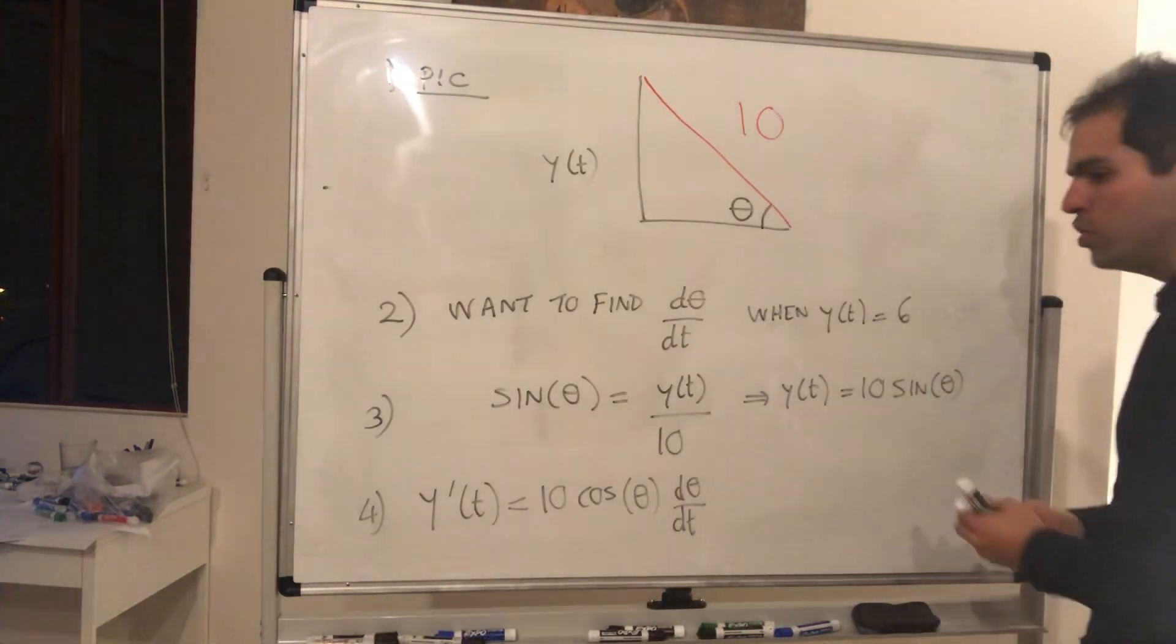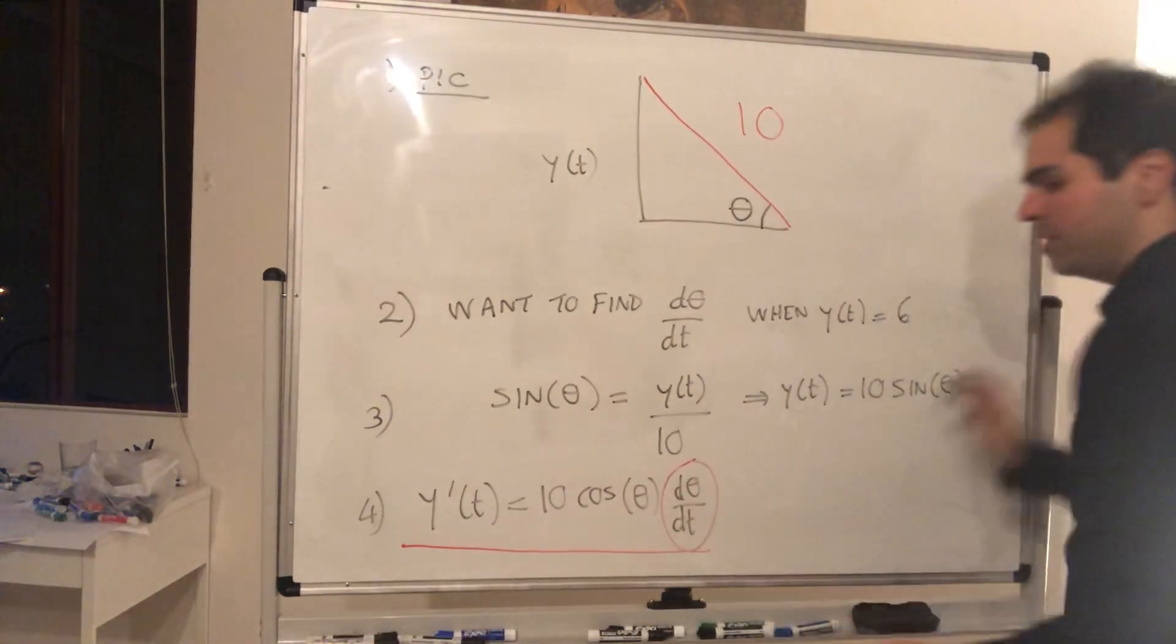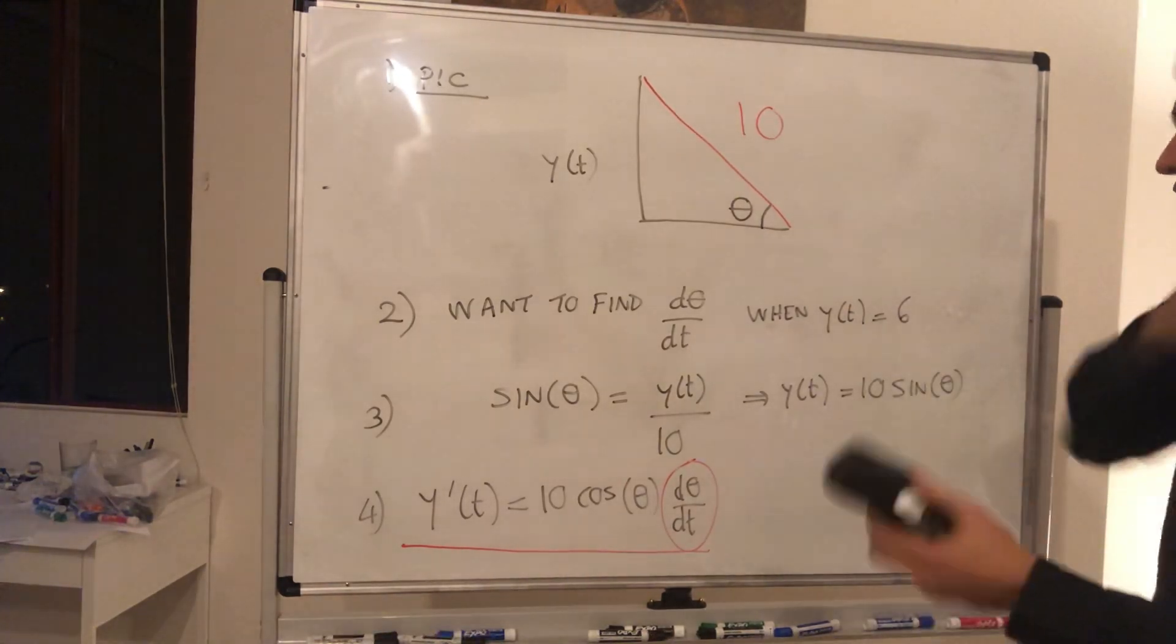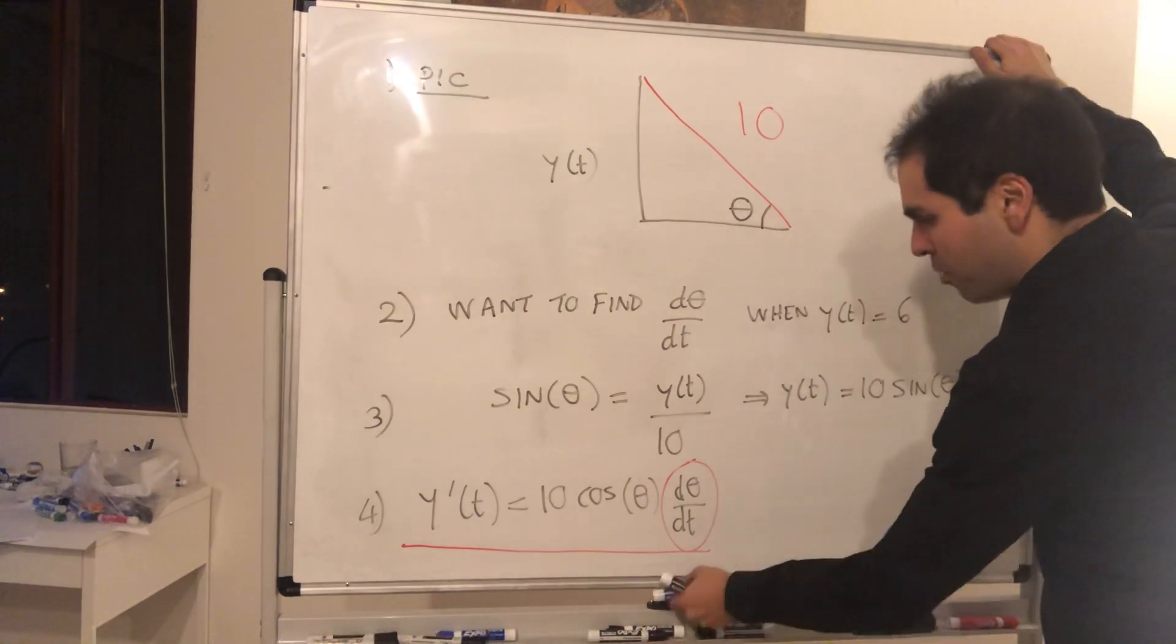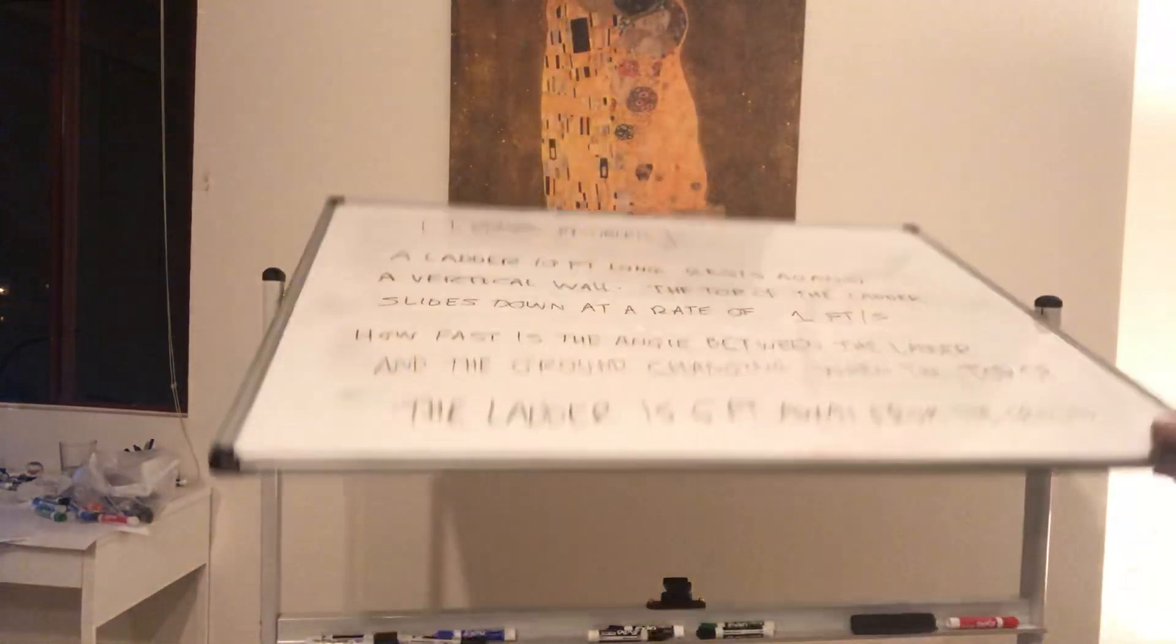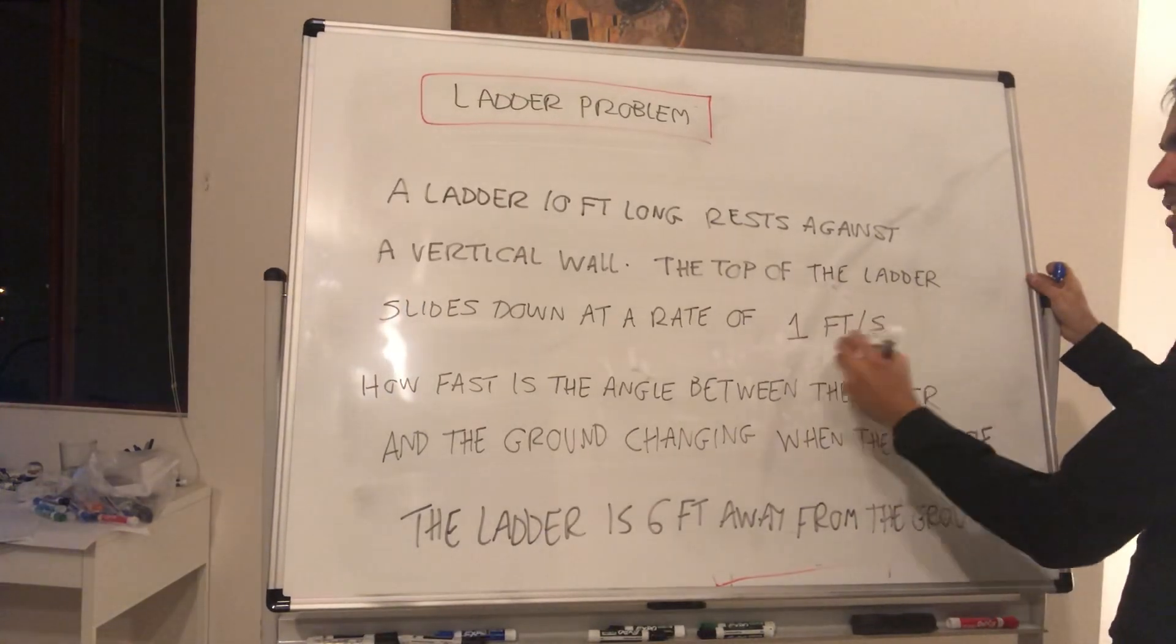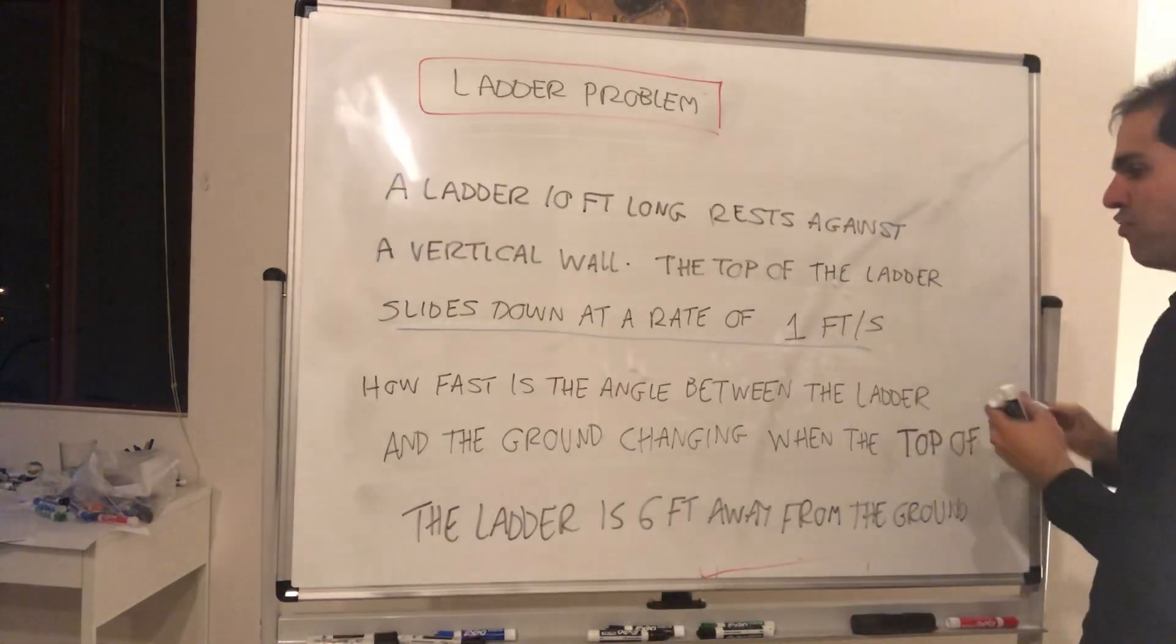And so all we need to do is plug in all the values that we have and we want to solve also for d theta over dt. So what do we know? So let's look back at our problem. We know that the ladder, the top of the ladder slides down at the rate of one foot per second.